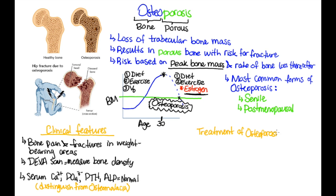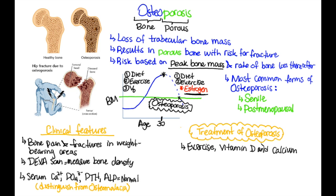The treatment of osteoporosis includes exercise, vitamin D, and calcium, and the goal of this is to limit bone loss. Also, bisphosphonates — what they do is go to the blood and attach to bone, and then osteoclasts eat these bisphosphonates, which induces apoptosis in those osteoclasts. So if you remove these osteoclasts from the picture, you won't be removing bone as much, and therefore you decrease the rate of bone loss.